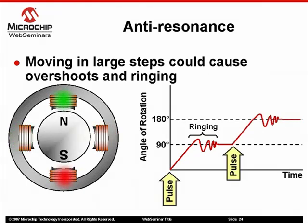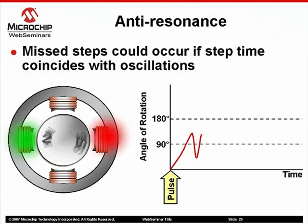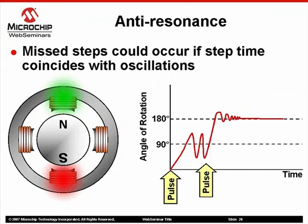Subsequent steps will suffer from the same ringing. In severe cases, this ringing could be so pronounced that the rotor will not have time to settle before the next step pulse is applied. In the above example, the excessive ringing has caused the motor rotation to miss the first step at 90 degrees. In position-sensitive applications, this could have severe consequences — not to mention that if you are not using a feedback network of any kind, rotor position will be undetermined.